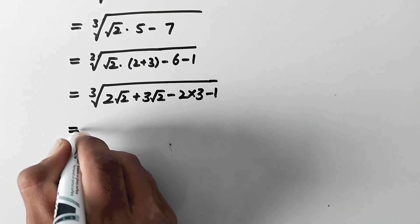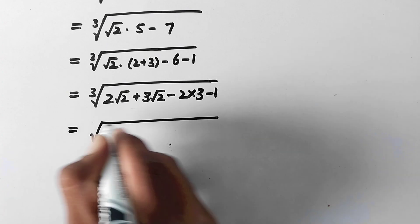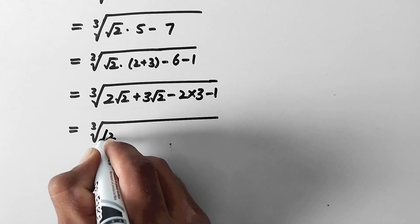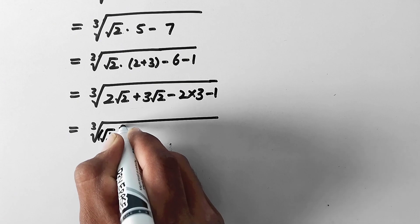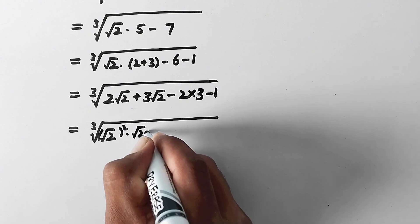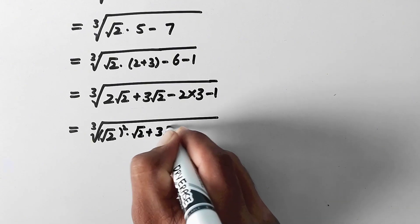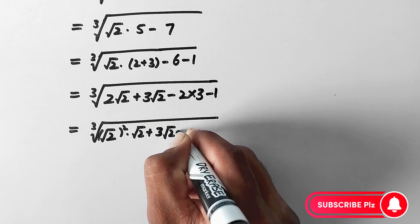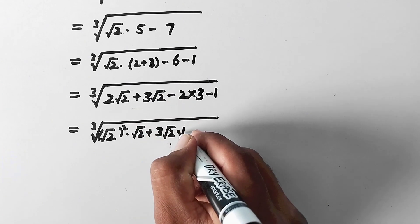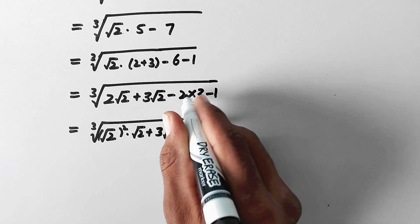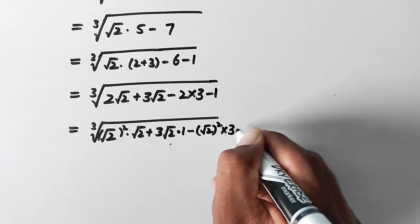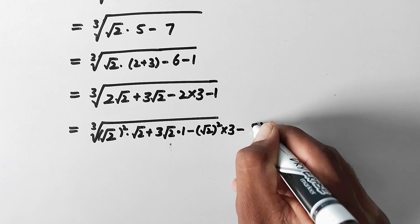And now in the next step, cube root of 2 times square root 2 — this 2 is the same as square root 2 squared. Square root 2 squared times square root 2, plus 3 times square root 2, and we will write 1 as multiplying to this value. There will be no effect on this value by multiplying by 1. And minus this 2 is again the same as square root 2 squared, multiplied by 3, minus 1, which is the same as 1 cubed. The whole value is under cube root.